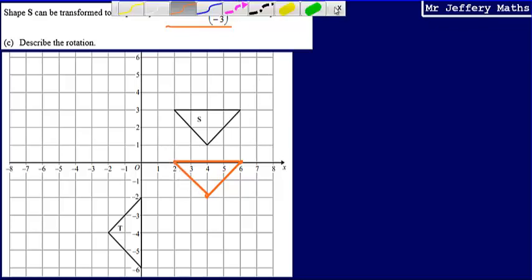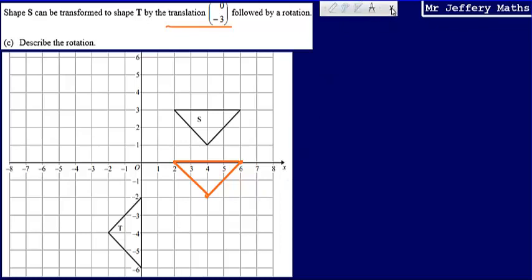And what we're asked to do is describe the rotation. How is our shape getting from this new position here to shape T? Now, one way that we can do this and work this out is we can use a compass. We know that it is a rotation. So we can say that it is a rotation when we can see here that's a quarter turn. That's a rotation of 90 degrees. So it's a 90 degree rotation and that is 90 degrees clockwise.